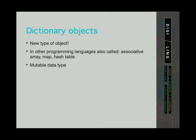Dictionaries are mutable data types. We already mentioned that mutable objects can be updated, that is, changed without creating a new object.